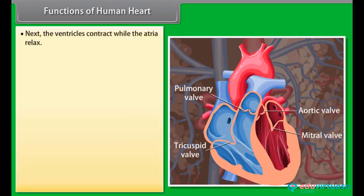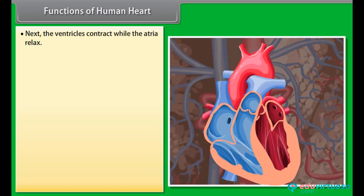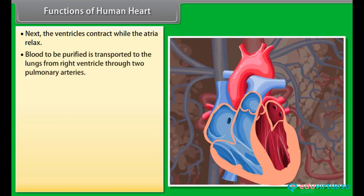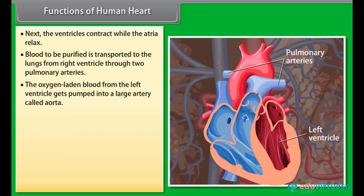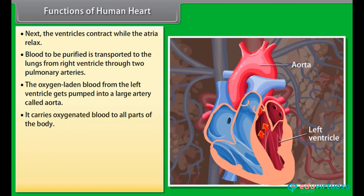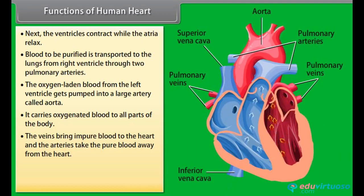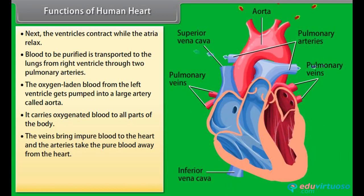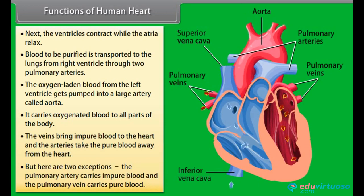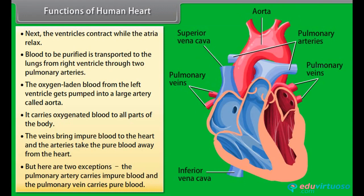Next, the ventricles contract while the atria relax. Blood to be purified is transported to the lungs from the right ventricle through two pulmonary arteries. The oxygen-laden blood from the left ventricle gets pumped into a large artery called the aorta, which carries oxygenated blood to all parts of the body. The veins bring impure blood to the heart and the arteries take pure blood away from the heart, but there are two exceptions: the pulmonary artery carries impure blood and the pulmonary vein carries pure blood.